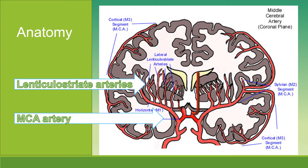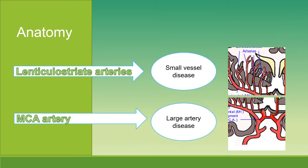Anatomy: the lenticulostriate artery supplies the basal ganglia area. These are small vessels. The MCA artery is the larger artery that comes from the carotid artery. Lenticulostriate arteries are small blood vessels, and the MCA artery is a big artery.